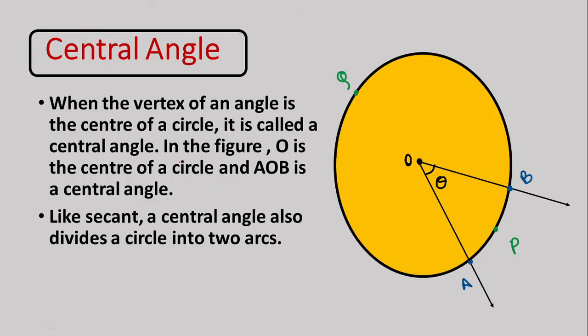Next we have the central angle — a new concept used many times throughout geometry. A central angle is one where the vertex of the angle is the center of a circle. The vertex is the point where the two arms of the angle meet. So angle AOB is a central angle because its vertex lies at the center O. Just like a secant, a central angle also divides a circle into two arcs.